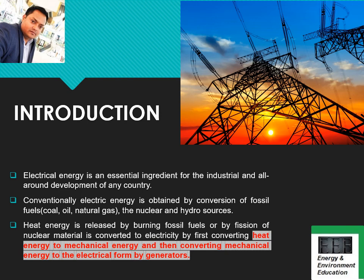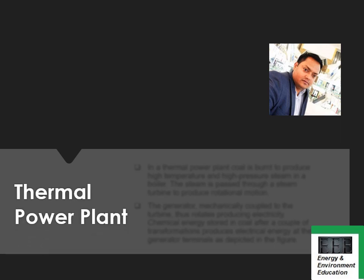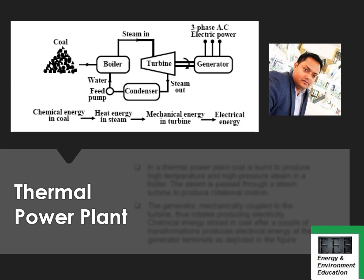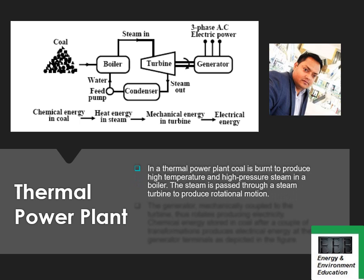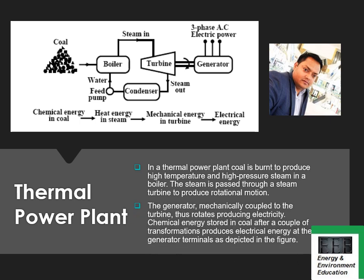Let's see how electrical energy is produced in a thermal power plant. Coal is burnt in a boiler where steam is generated, and that steam is used to rotate a turbine, which finally generates electricity. The chemical energy of coal produces steam, which is converted into mechanical energy in the turbine, and which is finally used to generate electricity. You may get short questions in your examination on how electricity is produced in a thermal power plant.